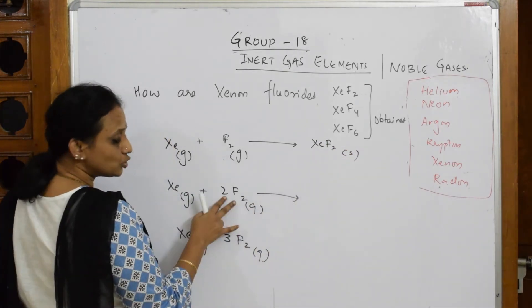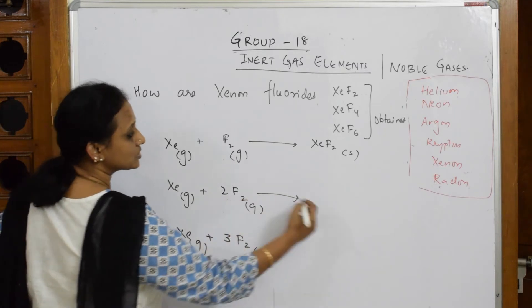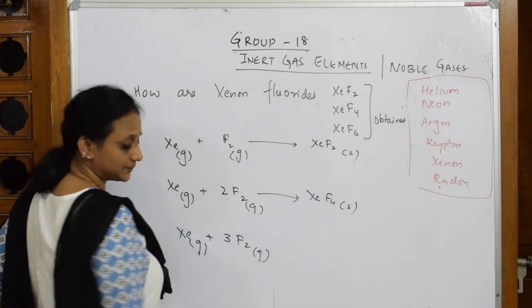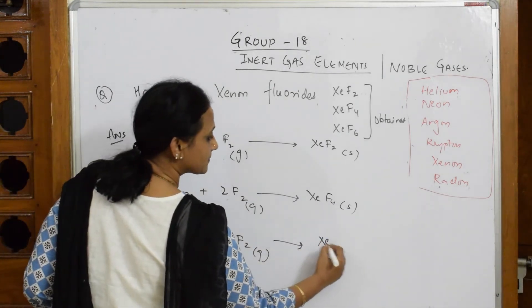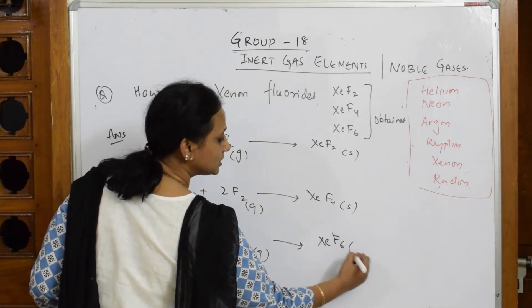Now here I've taken two moles. Two twos are four, so XeF4, this is a solid. Three twos are six, so XeF6, this is again a solid compound.